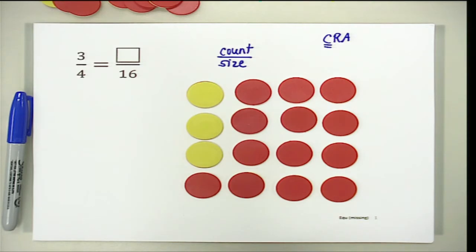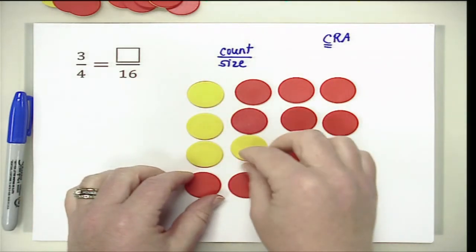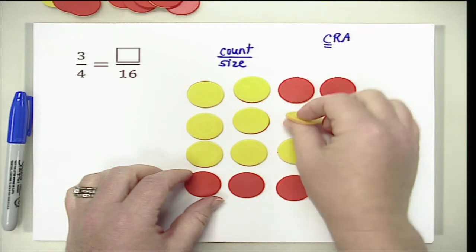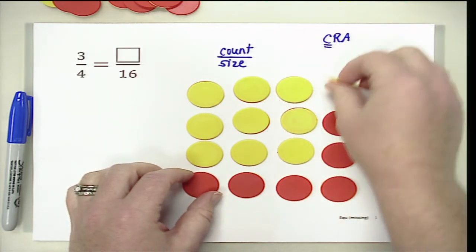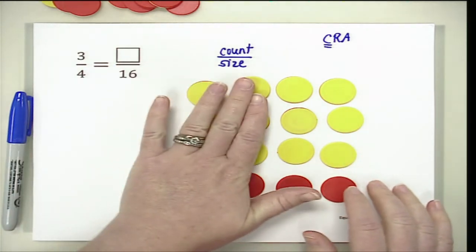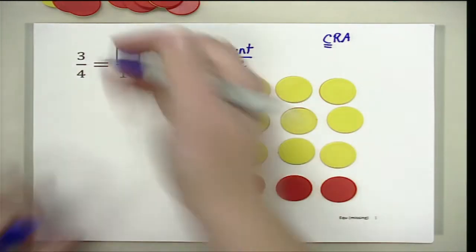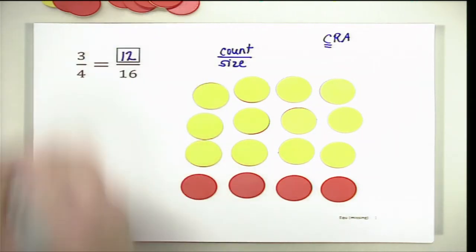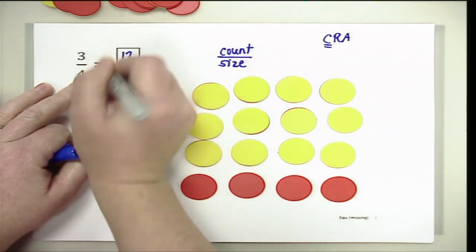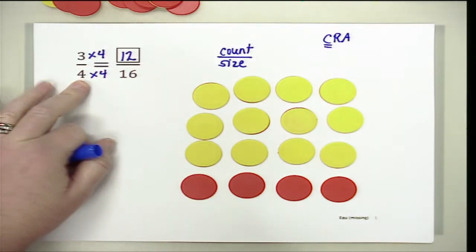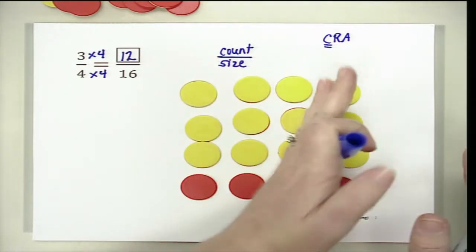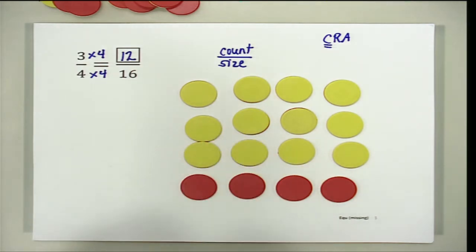Now I need to make sure that my count is the same as my original equation. For every 4 in size, my count needs to be 3, so I am going to go ahead and turn my count over. When my size is 16, my count is going to be 3, 6, 9, 12. Students can check: I multiplied by 4, so 3 times 4 equals 12. You can easily see why — I have 4 rows and my count is still 3 for each row.